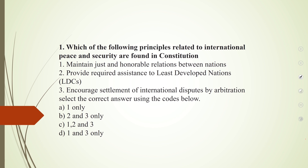The first question is: which of the following principles related to international peace and security are found in the Constitution? The three points are: first, maintain just and honorable relations between nations; second, provide assistance to least developed nations; and third, settlement of international disputes by arbitration.